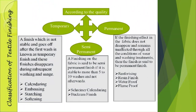According to quality — meaning the durability of the finishes — finishes are classified into three categories: temporary, semi-permanent, and permanent. A finish which is not stable and goes off after the first wash is known as a temporary finish. These finishes disappear during subsequent washing and usage, so their durability is very less. Examples of temporary finishes are calendaring, embossing, starching, and softening.